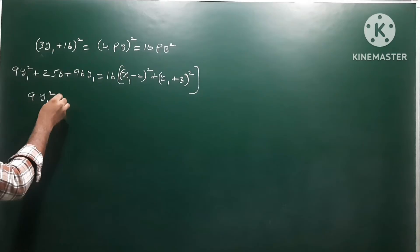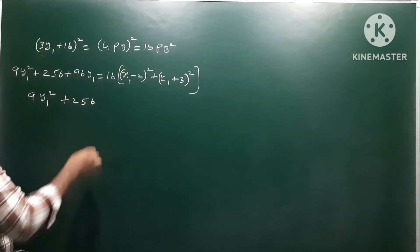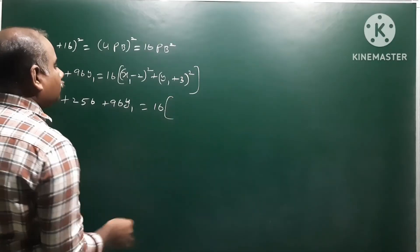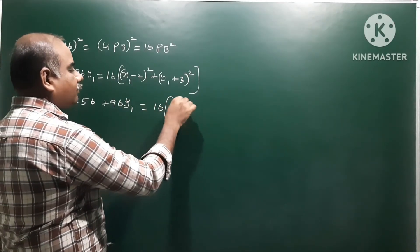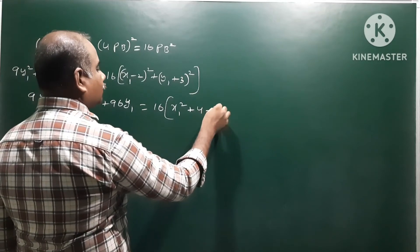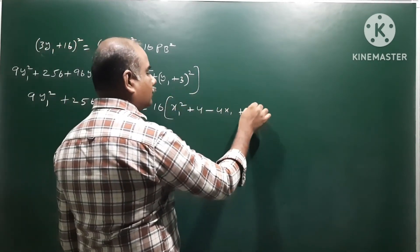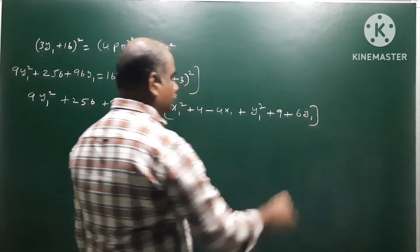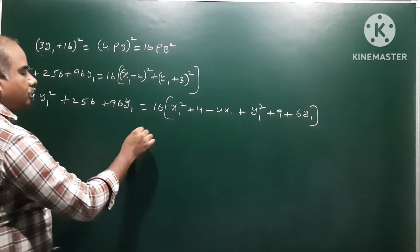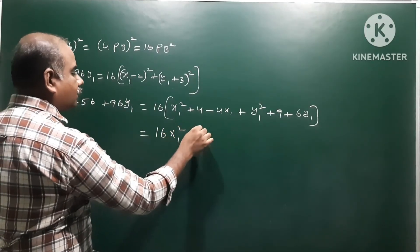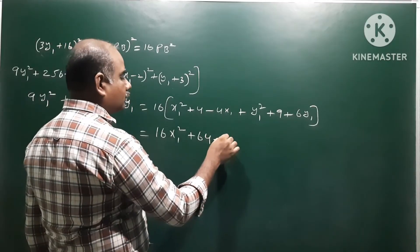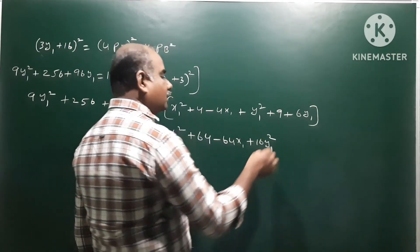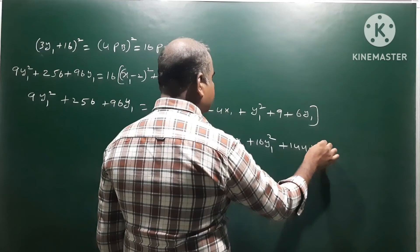Expanding the left side using (a plus b)²: 9y1² plus 256 plus 96y1. On the right side, expanding 16 times (x1 minus 2)² plus (y1 plus 3)²: 16x1² minus 64x1 plus 64 plus 16y1² plus 96y1 plus 144.